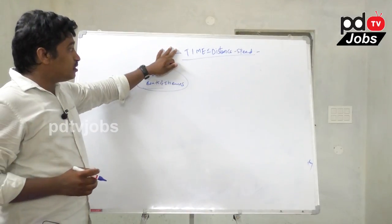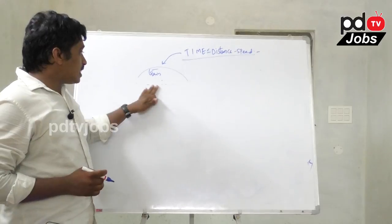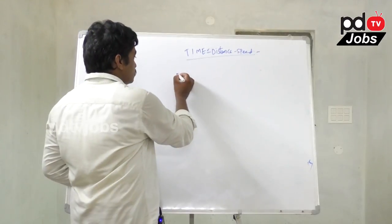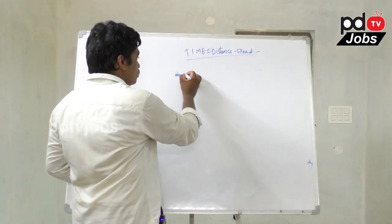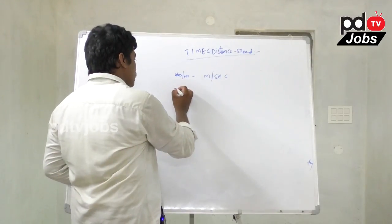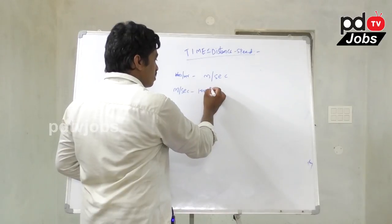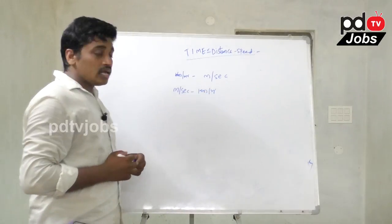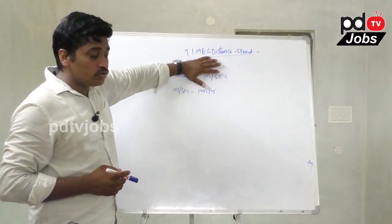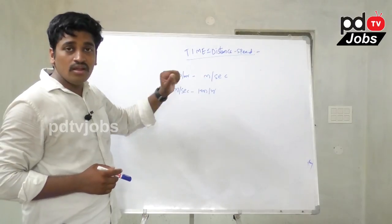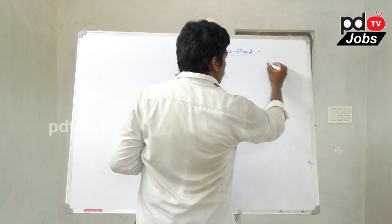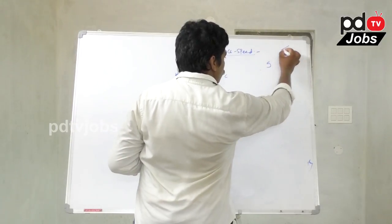Time, Distance, and Speed is an important concept. Two things are important: one is conversion — specifically kilometer per hour to meter per second conversion — and the other is the basic formula: Speed equals Distance divided by Time.